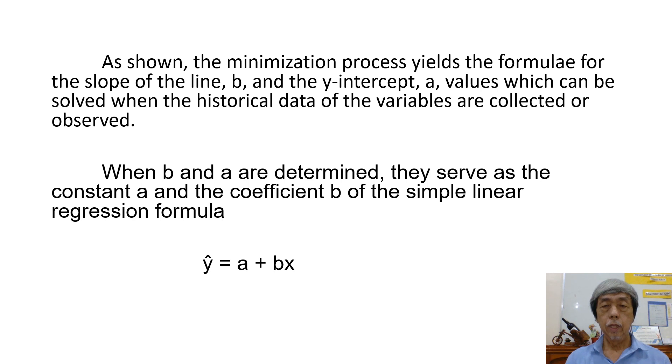As shown, the minimization process yields the formulae for the slope of the line B and the y-intercept A, values which can be solved when the historical data of the variables are collected or observed. When A and B are determined, they serve as the constant A and the coefficient B of the simple linear regression formula, y-carat equals A plus Bx.